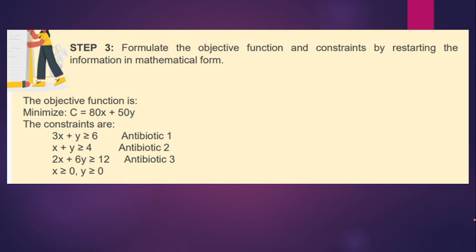Formulate the objective function and constraints by restating the information in mathematical form. The objective function is C = 80x + 50y. The constraints are: 3x + y ≥ 6, x + y ≥ 4, and 2x + 6y ≥ 12. These are our structural constraints. And the non-negativity constraint means no negative values are allowed.